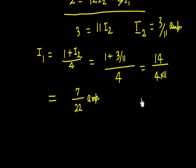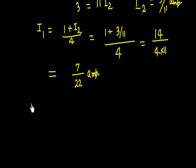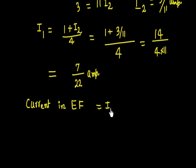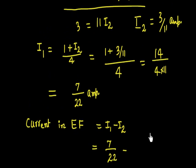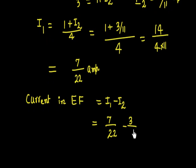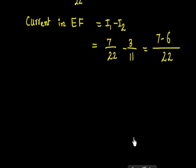Finally, the current in the middle wire EF is I1 minus I2 = 7/22 - 3/11 = 7/22 - 6/22 = 1/22 ampere. So the current in segment EF is 1/22 ampere.